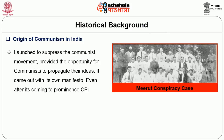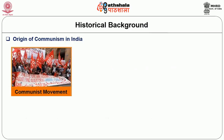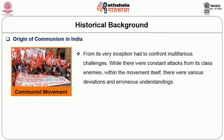The Meerut Conspiracy case, launched to suppress the communist movement, actually provided the opportunity for communists to propagate their ideas, and the party came out with its own manifesto. Even after coming to prominence, the CPI had to work underground for most of the 1930s and the beginning of the 1940s. It was only in 1942, during the anti-fascist war, that it was legalized.